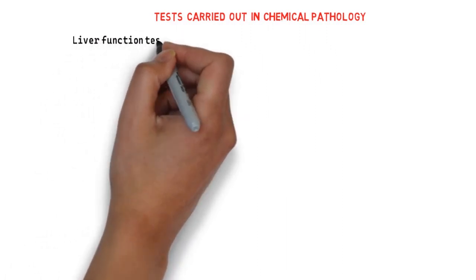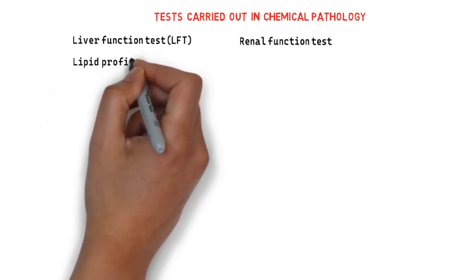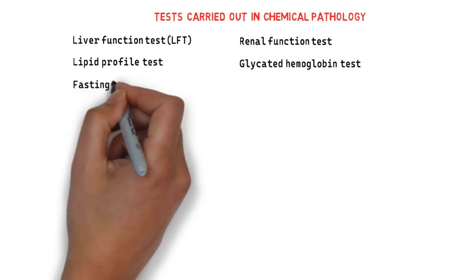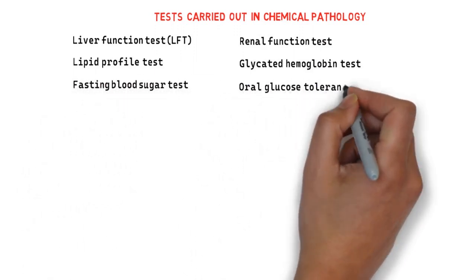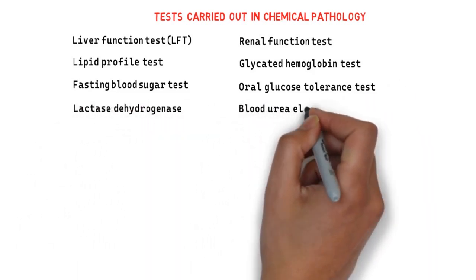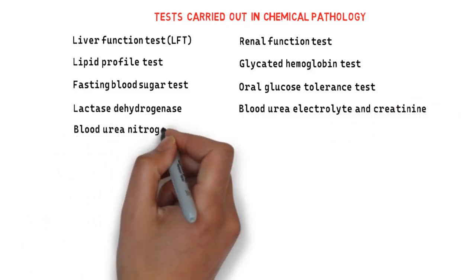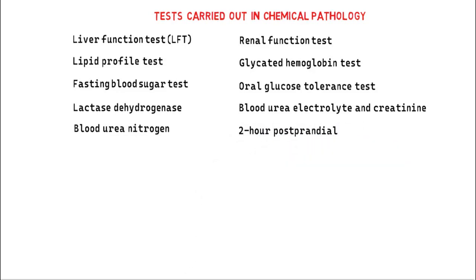There are various tests carried out in a chemical pathology lab, and they include the liver function test, renal function test, lipid profile test, glycated hemoglobin, fasting blood sugar, oral glucose tolerance test, lactase dehydrogenase, blood urea electrolytes and creatinine, blood urea nitrogen, and two-hour postprandial. These are just a few of the tests carried out in a chem path lab because they are so numerous.